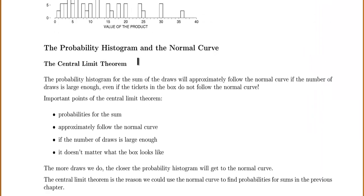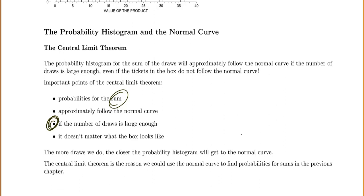Now there's something called the central limit theorem. The probability histogram — the theoretical chances — for the sum of the draws will approximately follow the normal curve if the number of draws is large enough, even if the tickets in the box don't follow the normal curve. Important points: this is only guaranteed for the sum. It only works if your number of draws is large enough. It doesn't matter what the box looks like — as long as you're looking at the sum with a large number of draws, the sum will follow the normal curve. This is the reason we could use the normal curve to find probabilities for sums in the previous chapter.